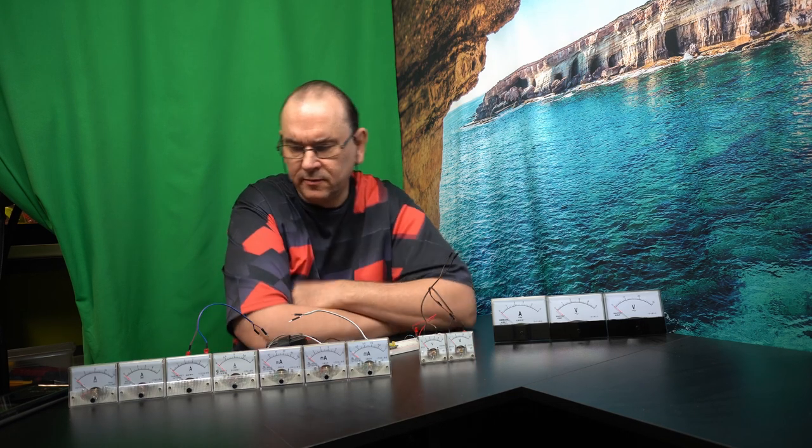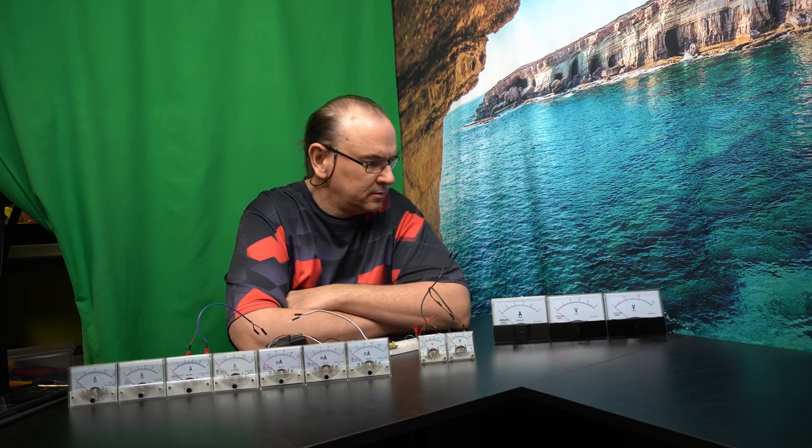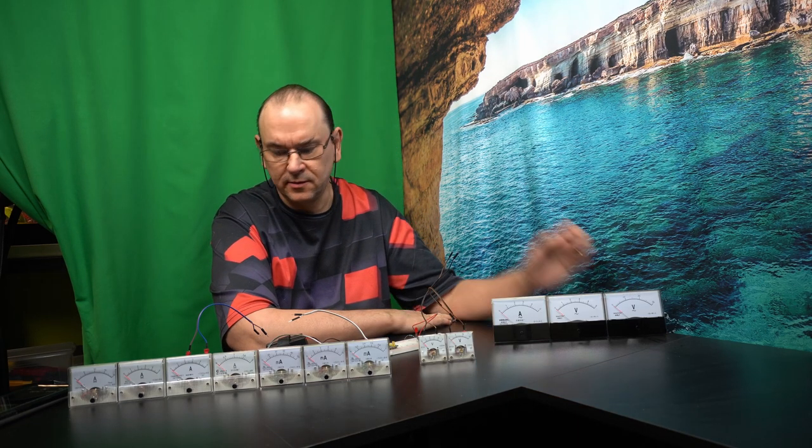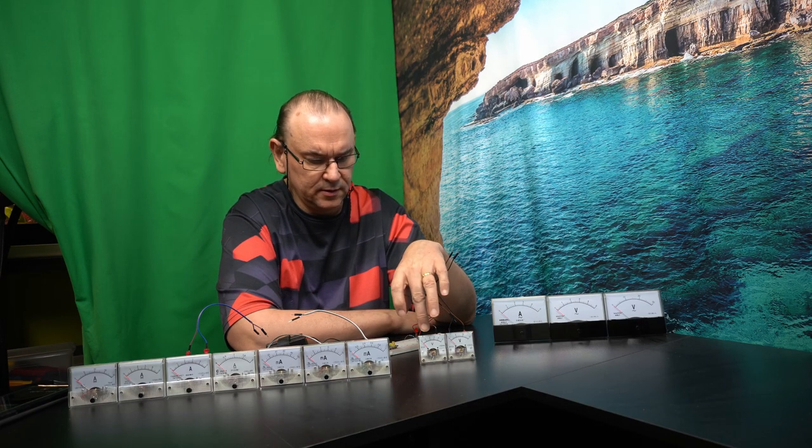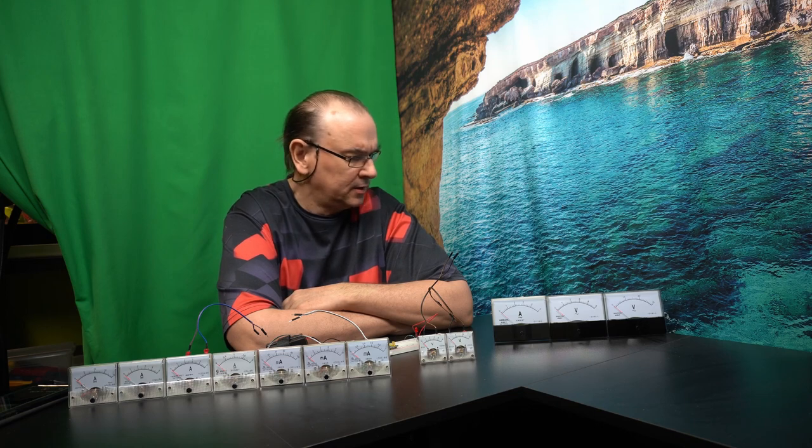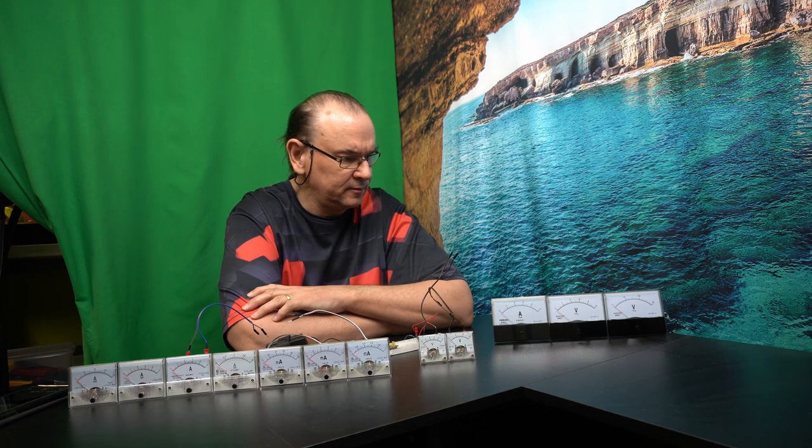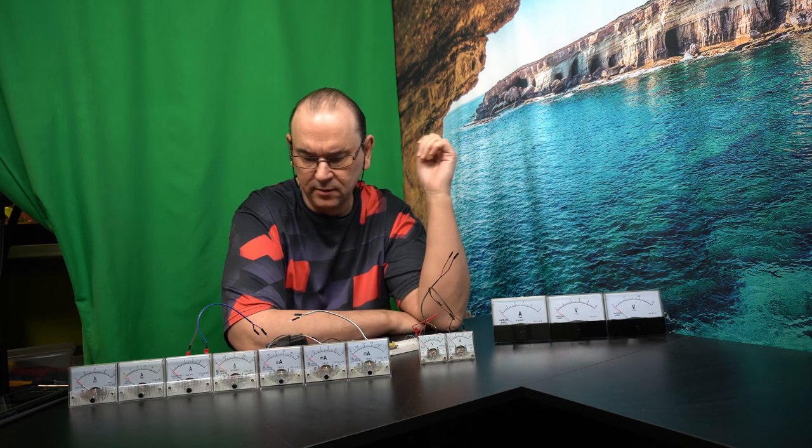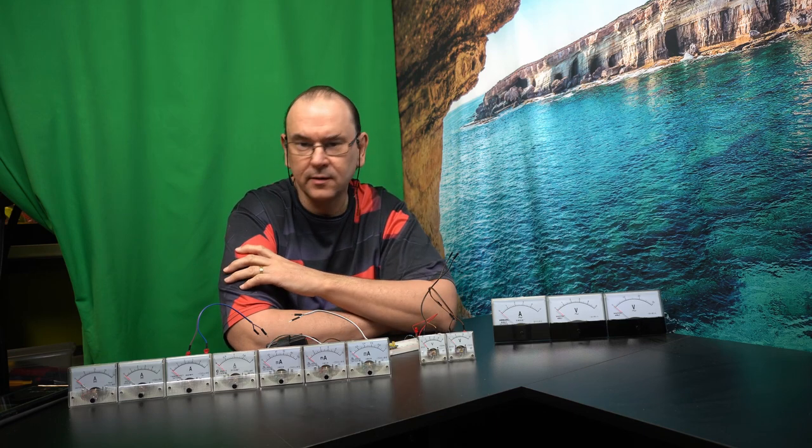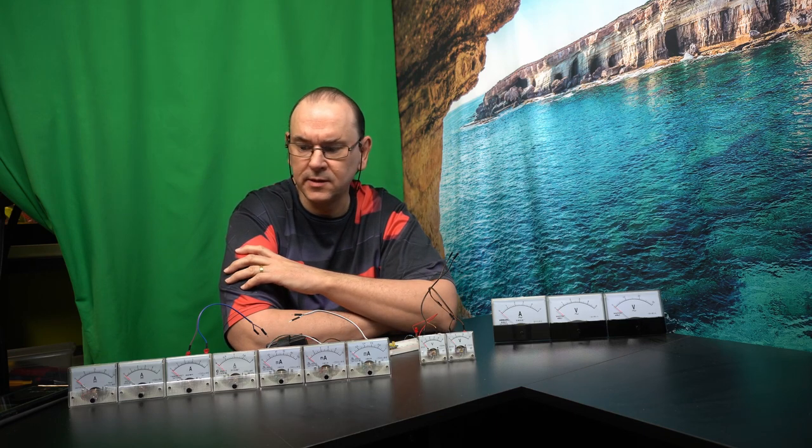Analog panel meters come in various different sizes. Like here we have larger sizes, here are smaller and even smaller here. You can get them for normal values like AC voltage, AC current, the same with DC. You can get it for DC current and DC voltage.